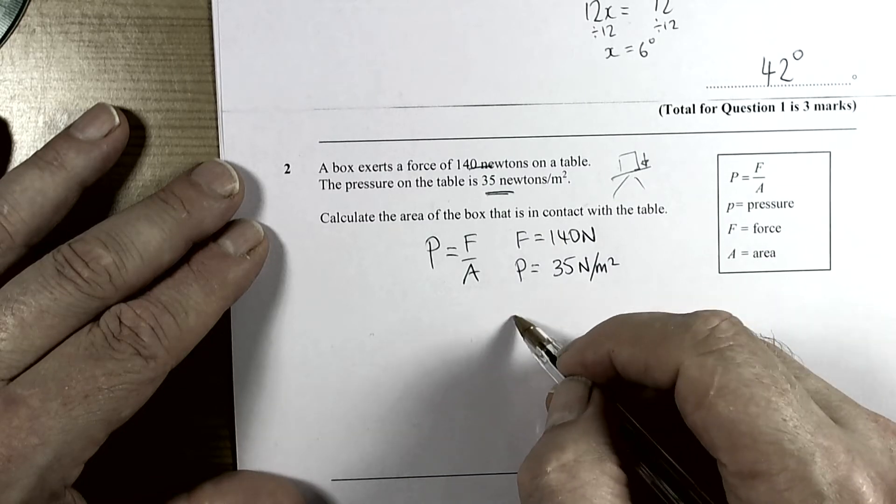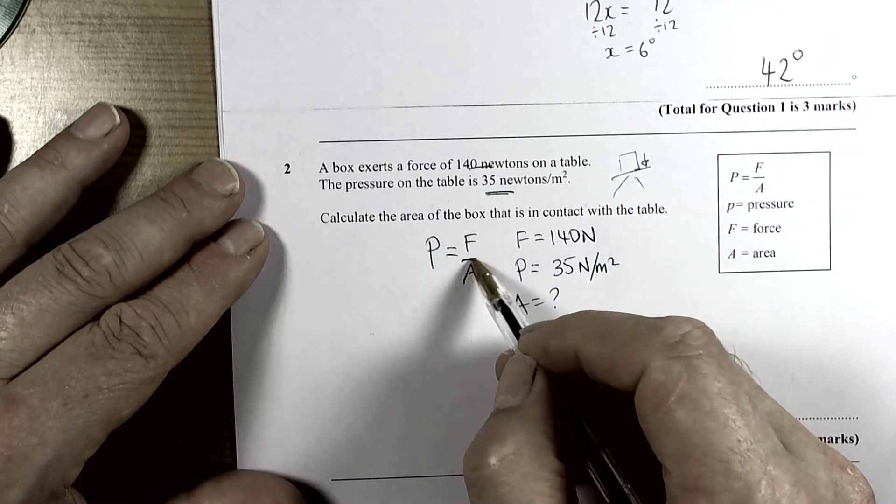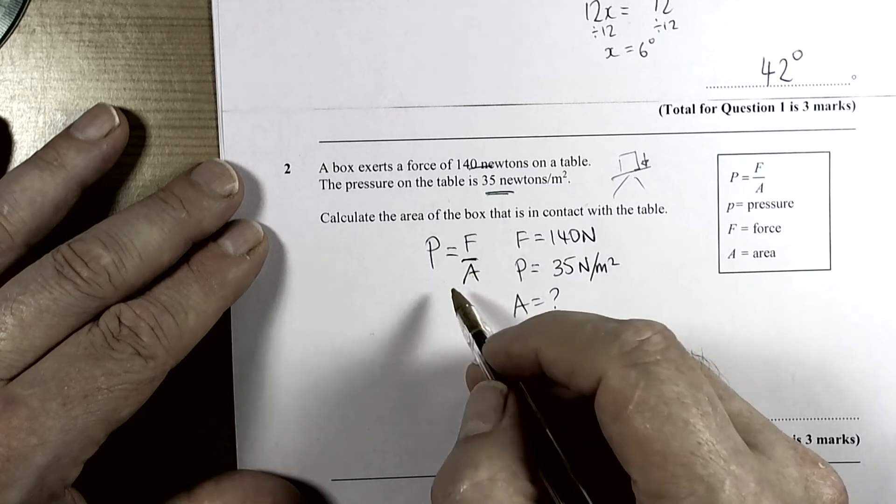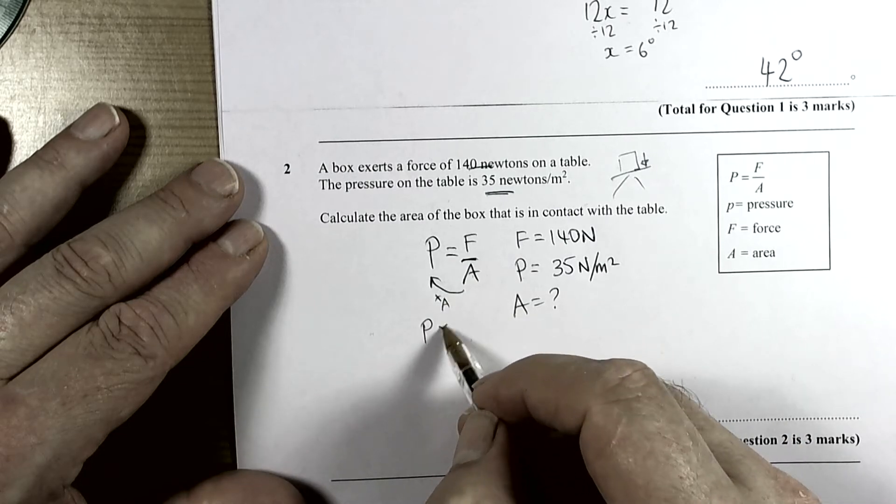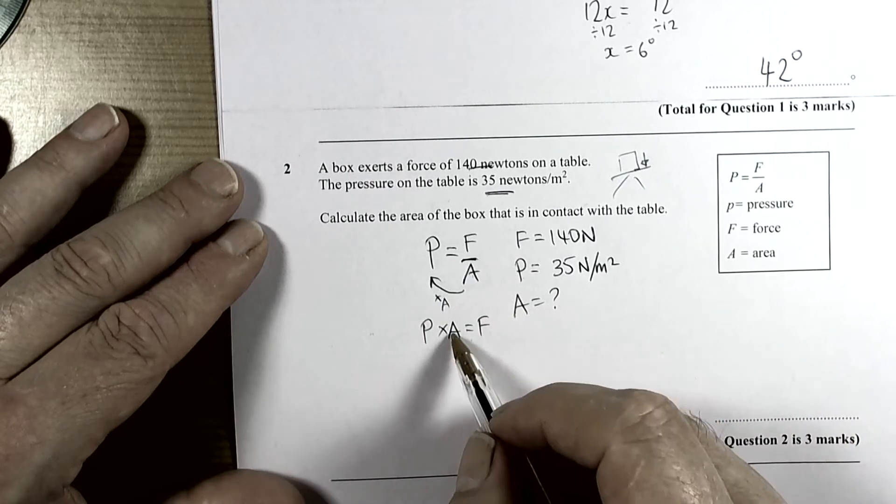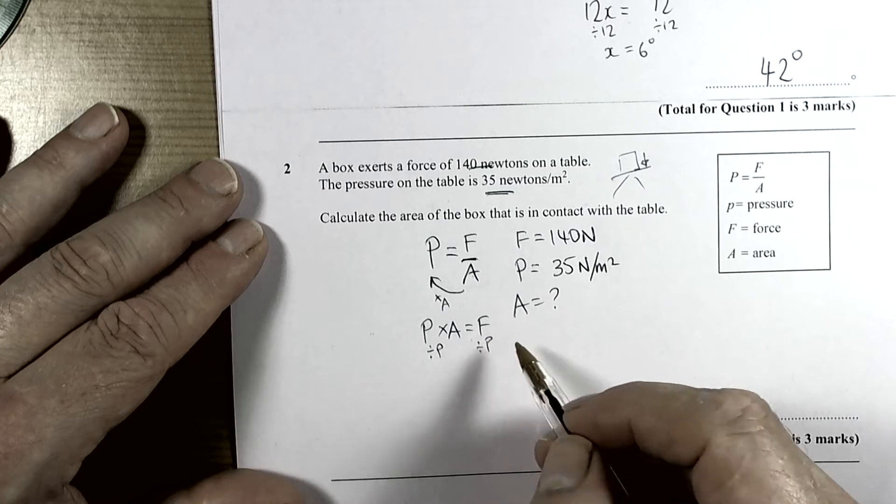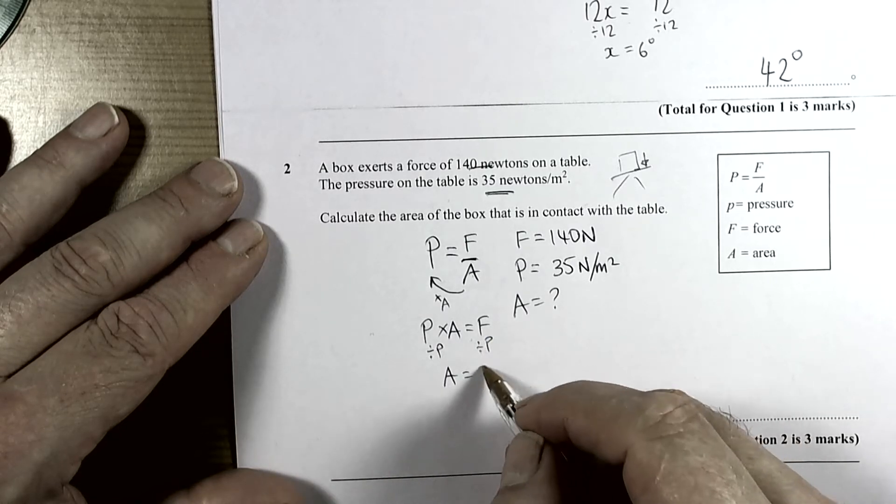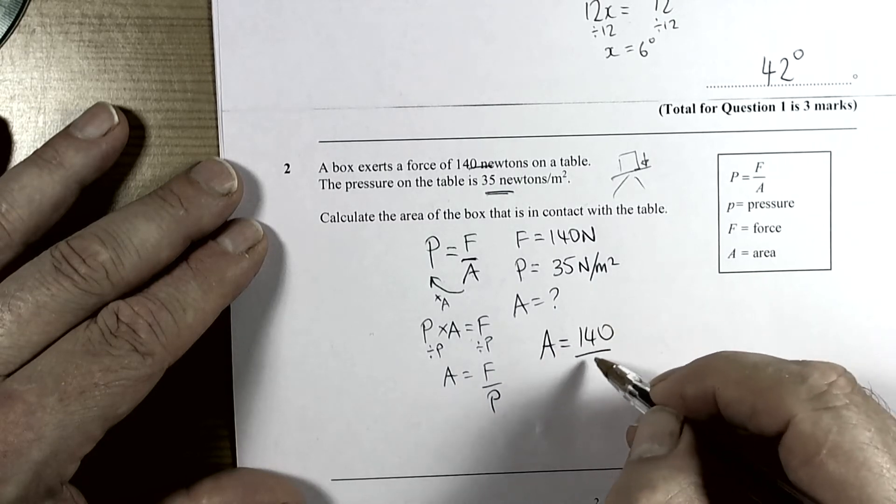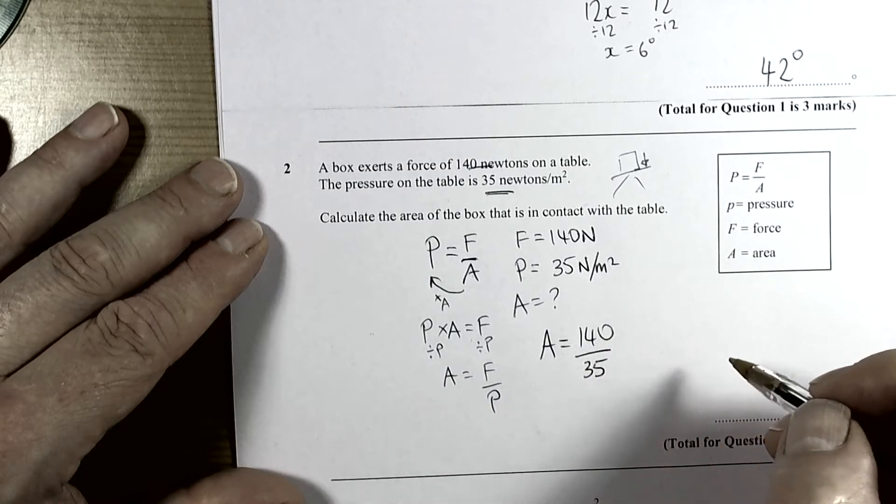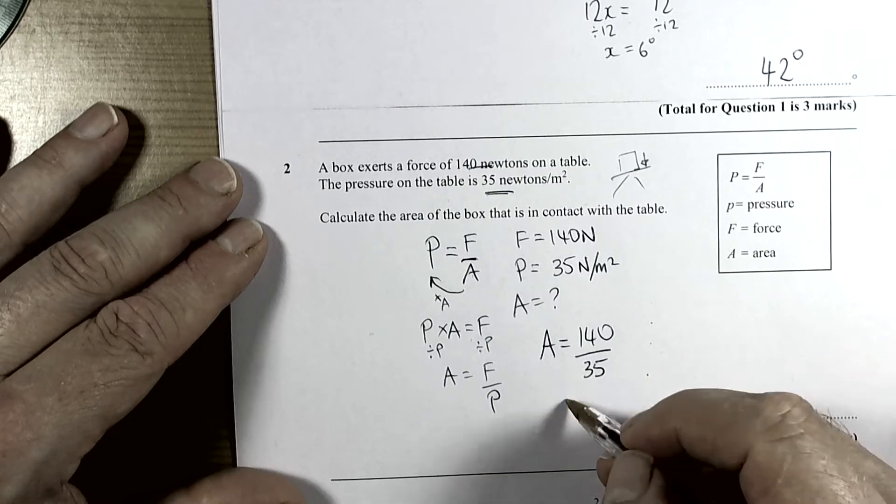The area is in the wrong place, it needs to be the subject. We can take that area across - it says dividing, so we times it. We have pressure times area equals the force. Then we want the area as the subject, so we're going to move the p to the other side to leave a on its own for the area. So we have the area equals the force divided by the pressure. In this question, the area is going to equal 140 divided by 35. Going through our 35 times table: 35, 70, 105, 140 - that's four times. So it's going to be four.